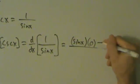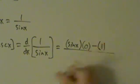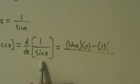Okay, bottom times the derivative of the top, minus the top, which is just 1, times the derivative of the bottom. And the bottom is sine, so its derivative is cosine.